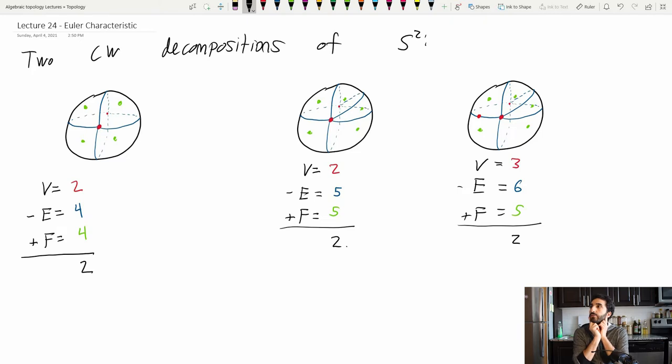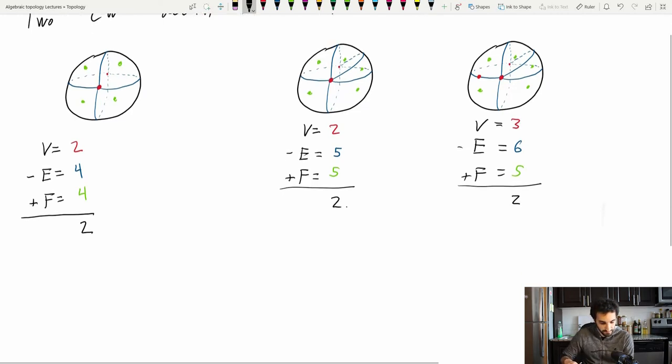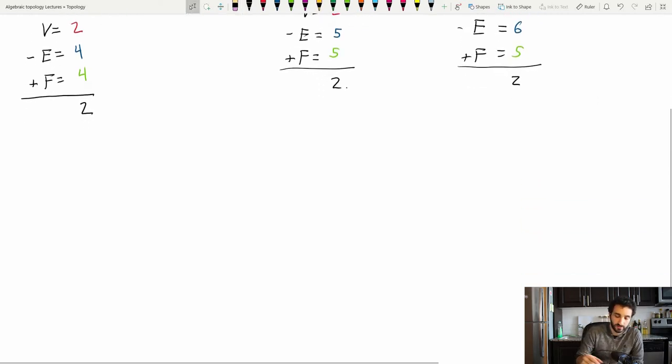And if you think about it if you do any of this subdivision what happens is you either add a vertex and an edge but those are going to cancel out because they have opposite signs. Or I'll add an edge and a face and again they'll cancel out. So it seems like no matter what I do I end up with this number two.